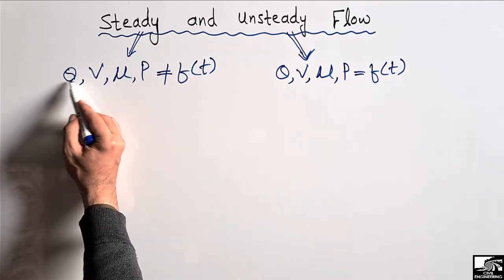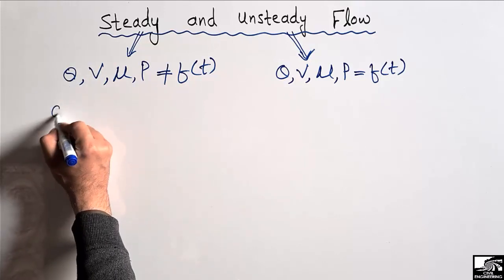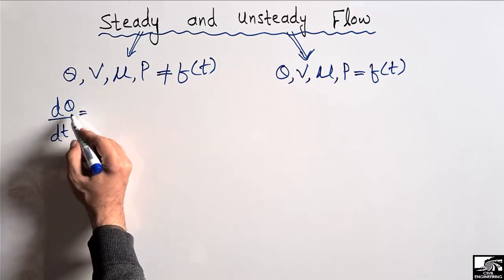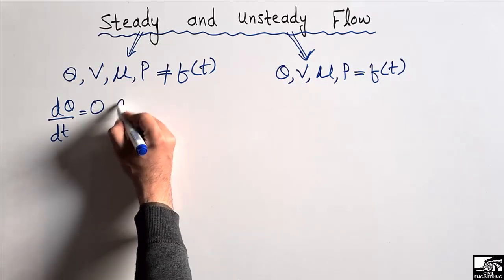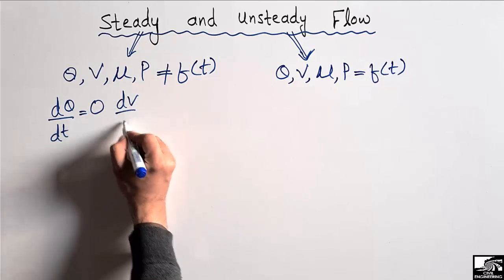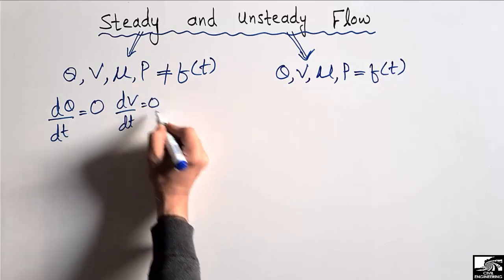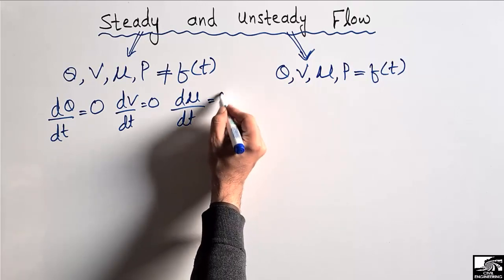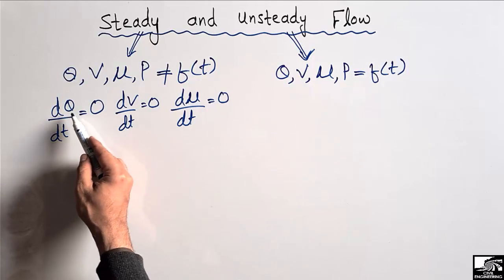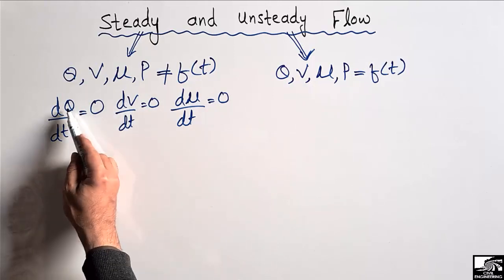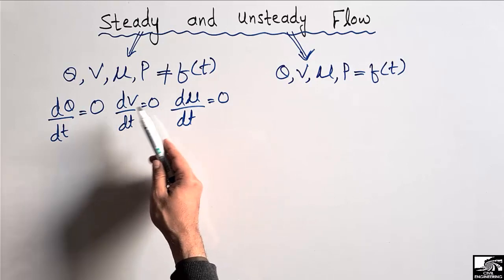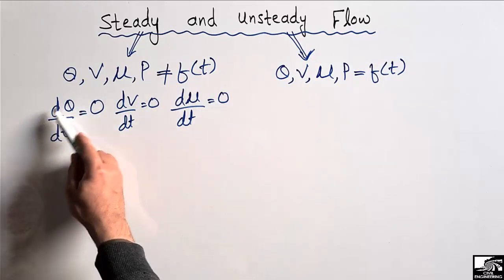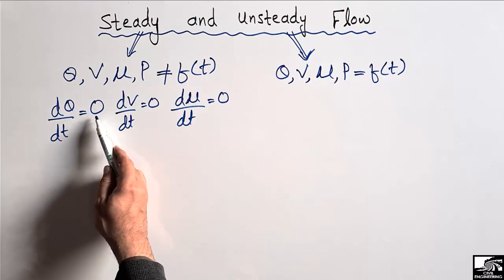To explain in more detail, consider the discharge of the fluid with respect to time. For steady flow, the derivative of discharge with respect to time will be equal to zero. Similarly, the derivative of velocity with respect to time will be zero, and also the derivative of viscosity or pressure with respect to time will be zero, because there is no change in these properties with respect to time.